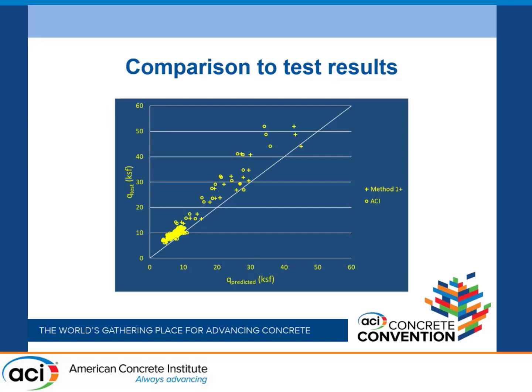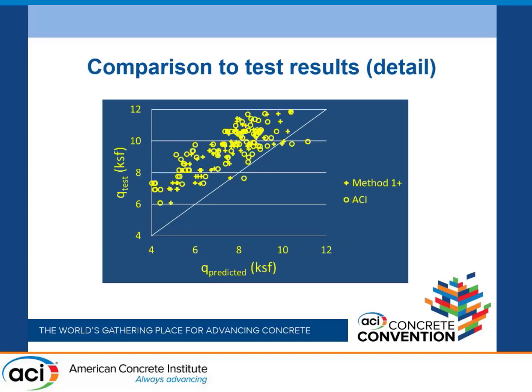Here's what the test results look like. We've got only a few test specimens with these huge soil pressures. We're plotting the test pressure against the pressure predicted. The circles are all ACI and the pluses are all method one plus. Here's a detail of the data in the cloud. They're both performing quite well, though you can generally see that ACI has a larger scatter everywhere and the strip model approach is just pulling the data together.